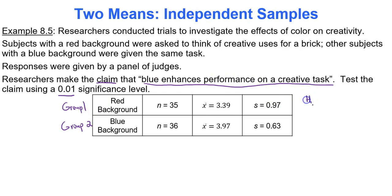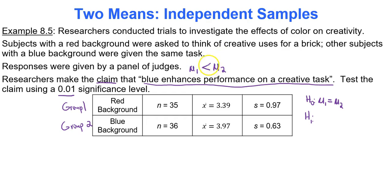I need to list my hypotheses. The null hypothesis is always that the two population means, mu1 and mu2, are equal. The claim is that blue enhances performance, meaning the mean for group 2 will be greater than group 1. So if blue performs better than red, the red group's mean should be smaller than the blue group's mean. It's always best to write group 1 on the left when using technology. So the null hypothesis is mu1 equals mu2, and my alternative hypothesis — which is the claim — is mu1 is less than mu2.